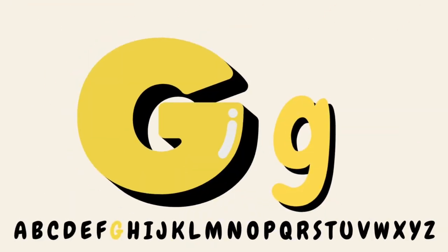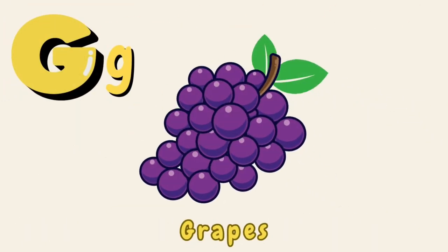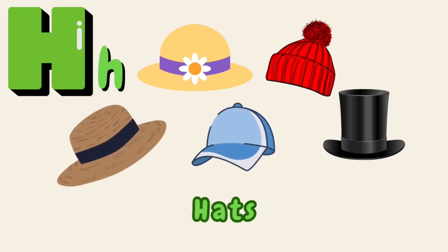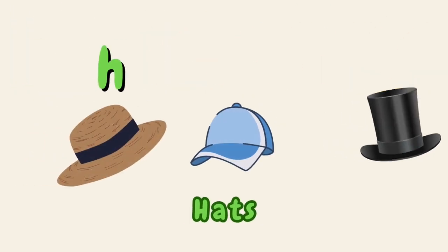G, G, G. G is for Grapes. G, G, Grapes. H, H. Can you make the H sound? H, H. H is for Hat.